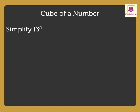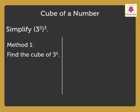Simplify 3 square raised to the power 3. There are two ways to simplify this problem. Let us see both of them. The first method is to find the cube of 3 square and get the answer. That is, 3 square into 3 square into 3 square is equal to 9 into 9 into 9, which is 729.